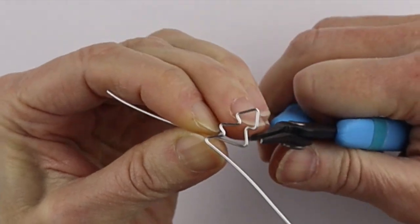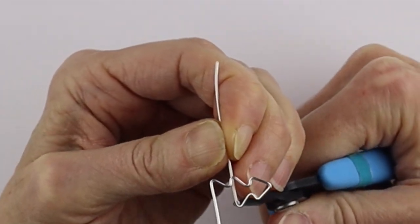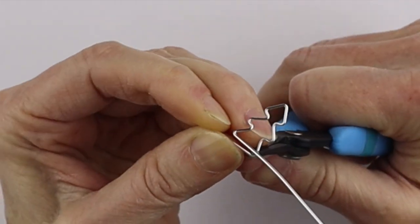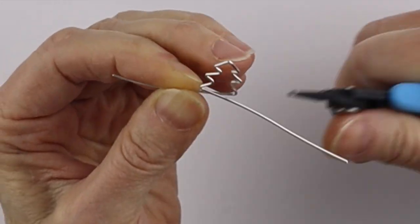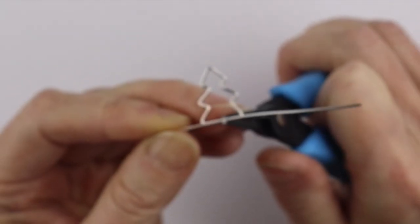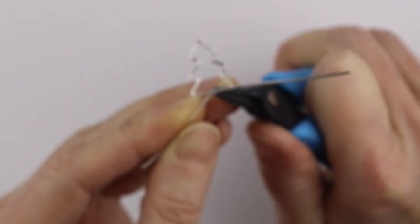So we're just going to play around with this. Get it the right shape. Try to get it symmetrical. And then bring this one across. We can just compare it a little bit. Bring that one straight across. And then where you want the trunk to be in the middle, just bend it at a right angle.